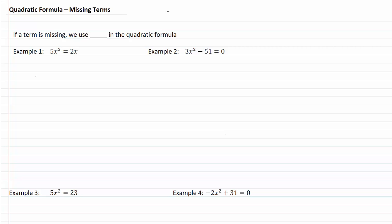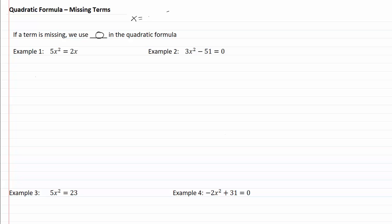Quadratic formula with missing terms. If a term is missing, we will use zero in the quadratic formula. Just as a quick reminder, our formula is x equals negative b plus or minus the square root of b squared minus 4ac, all over 2a.